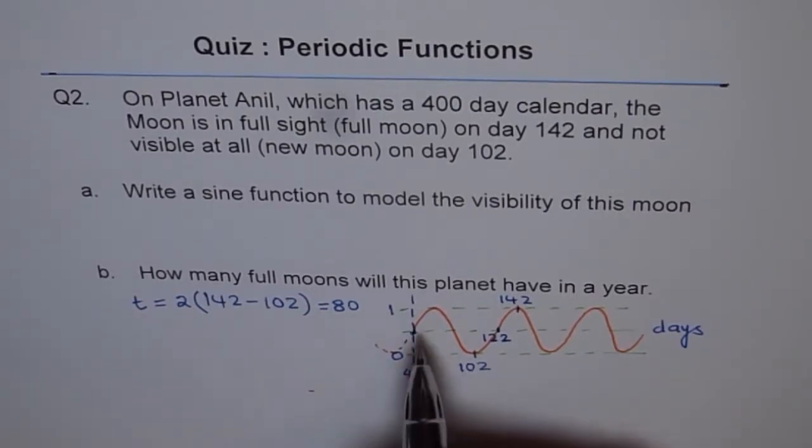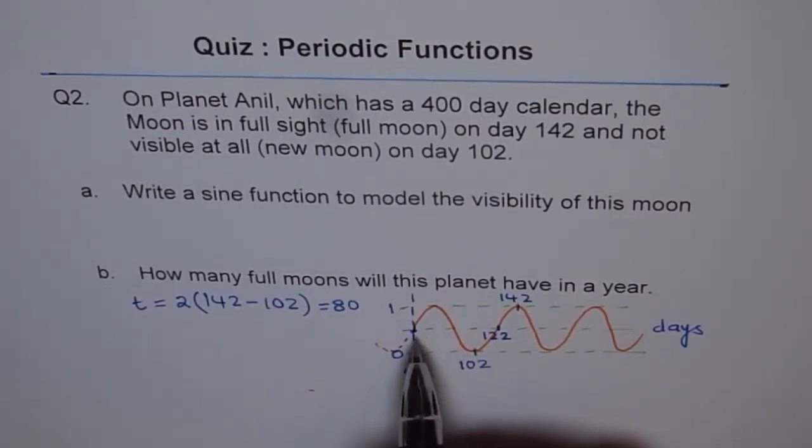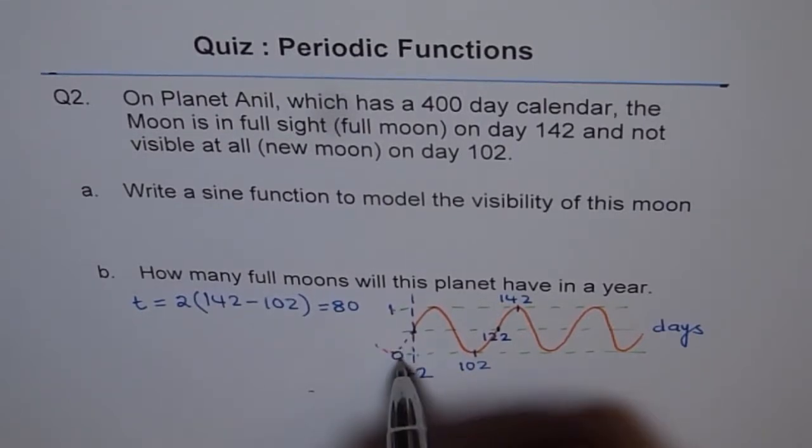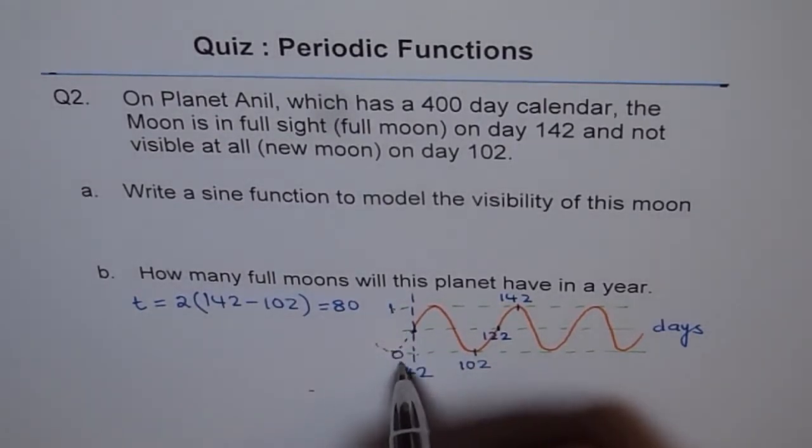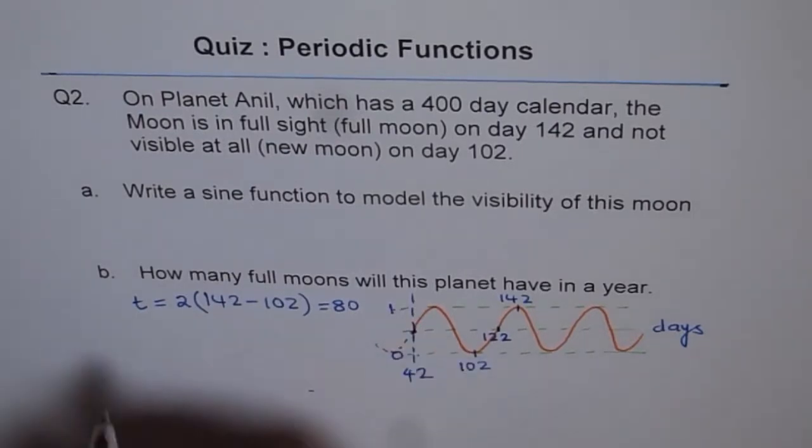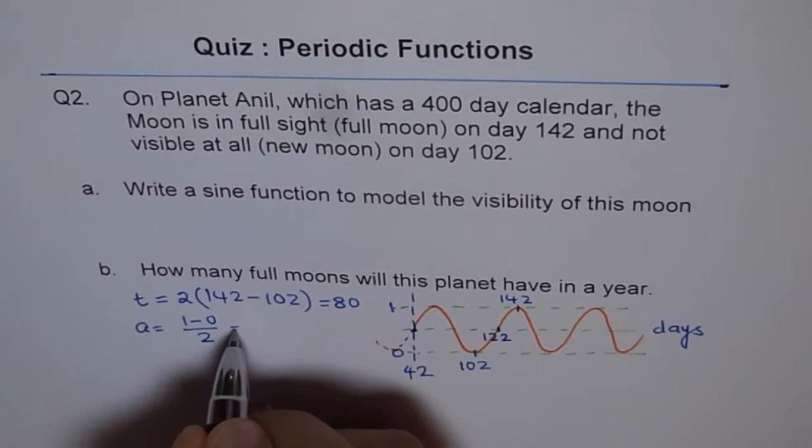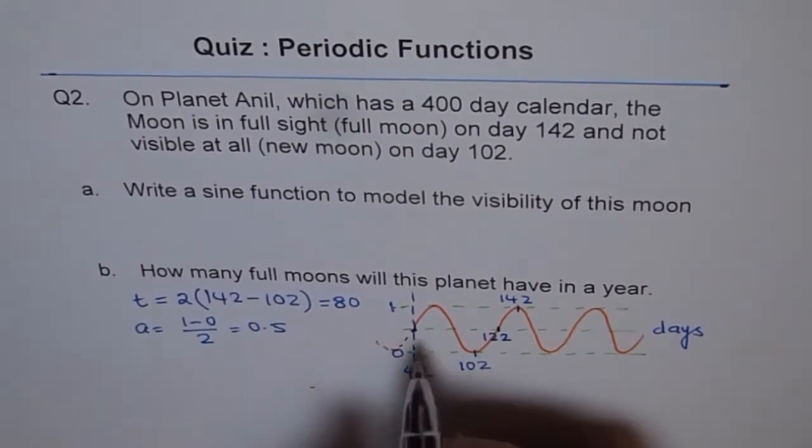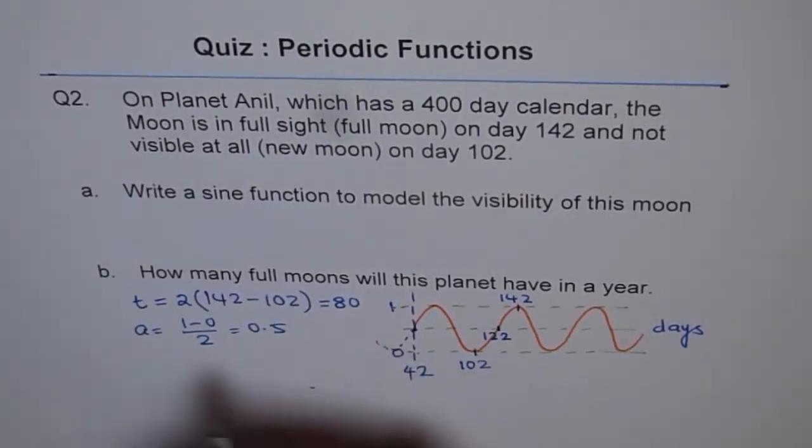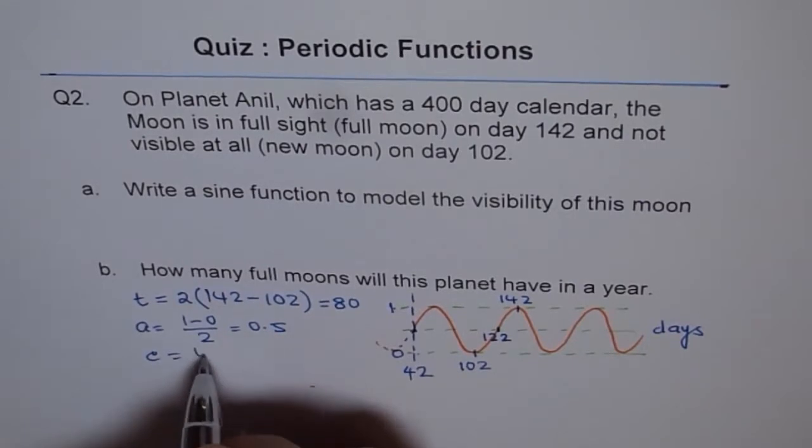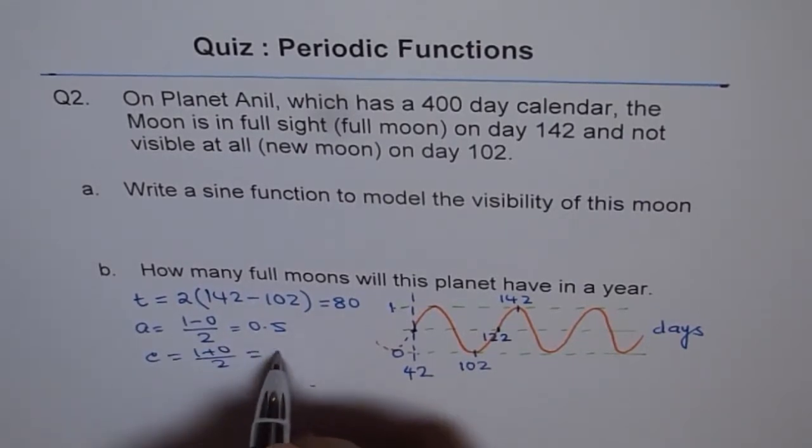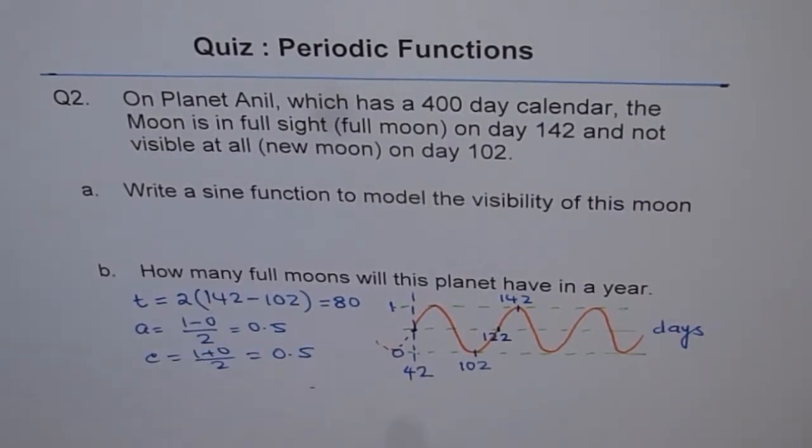Now, what is the amplitude? Amplitude is how high does it go from the mean position? It goes 0.5 units up and 0.5 down. Or you can find amplitude, you subtract 1 minus 0 and divide by 2. So amplitude equals to 1 minus 0 over 2, which is 0.5. And the axis by which it goes up, c equals to 1 plus 0 by 2, which is 0.5 also.